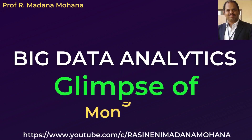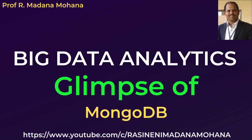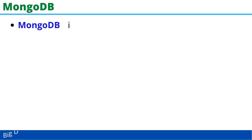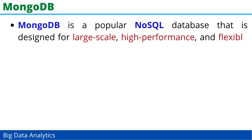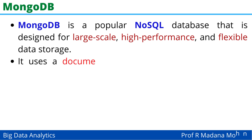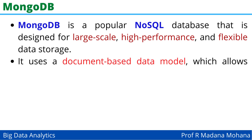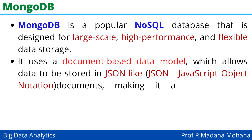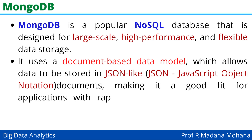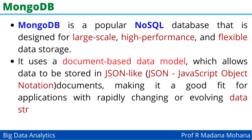Hello everyone, welcome to the course Big Data Analytics. In this video we will see a glimpse of MongoDB. MongoDB is a popular NoSQL database designed for large-scale, high-performance, and flexible data storage. It uses a document-based data model which allows data to be stored in JSON-like documents — JSON means JavaScript Object Notation — making it a good fit for applications with rapidly changing or evolving data structures.